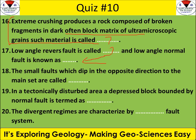Question 18: in a small fault where the dip is in the opposite direction to the main set, what do we call that small fault? Question 19: in a tectonically disturbed area, what is the term for a depressed block that is bounded by faults? Question 20: in a divergent regime, what type of fault is characterized or most commonly found?